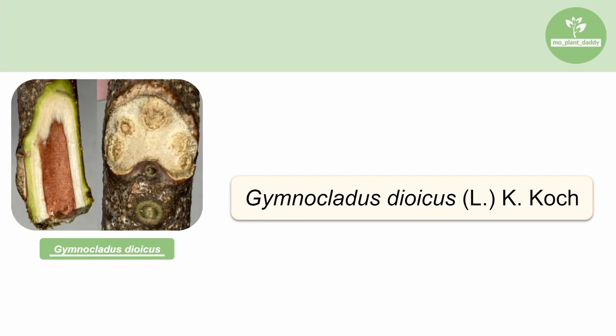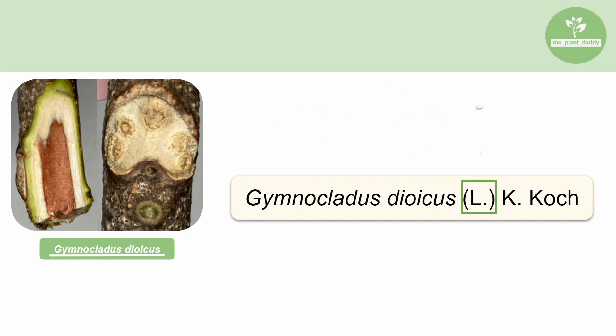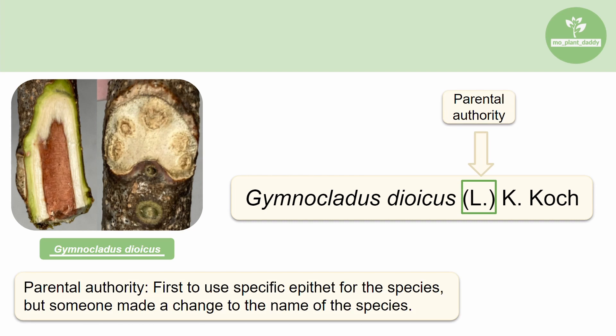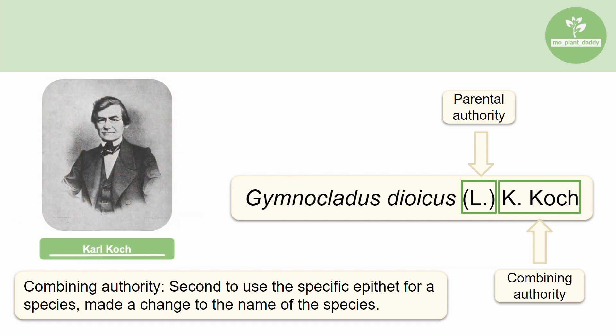What if someone made a revision to a species name? We can see an example of that with Gymnocladus dioicus L K. Koch, otherwise known as the Kentucky coffee tree. Gymnocladus is our genus and dioicus is our specific epithet. The L in parentheses is the parental authority, which marks who was first to use that specific epithet for that species — Linnaeus originally described this species. The name outside of the parentheses is called the combining authority, the person who made a change to the name. K. Koch stands for Carl Koch, who is a German botanist.